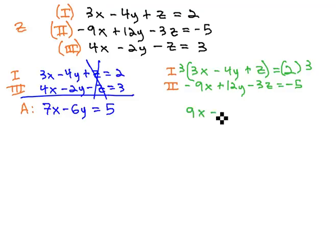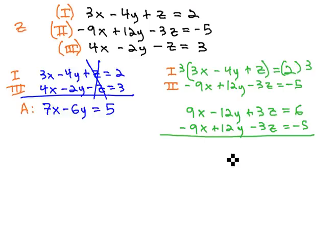This gives us 9x minus 12y plus 3z equals 6, second equation, negative 9x plus 12y minus 3z equals negative 5, and again you notice as we try and add these equations together, the x's subtract out, the y's subtract out, and the z's subtract out, leaving just 0 on the left side.